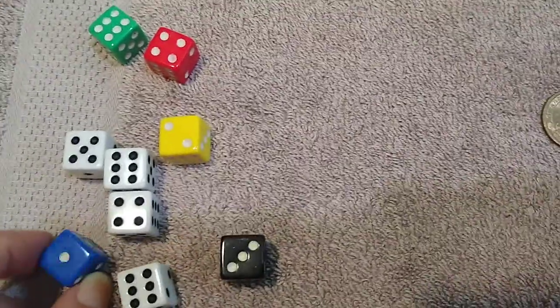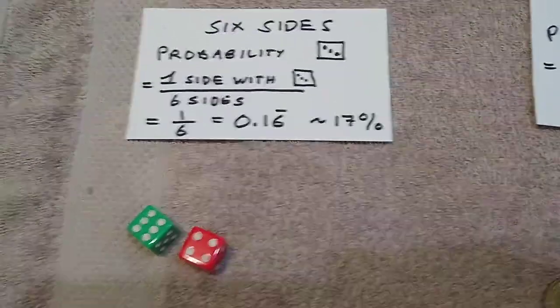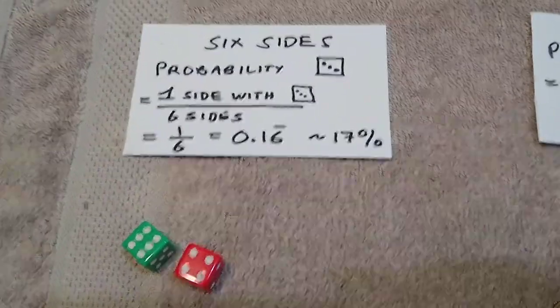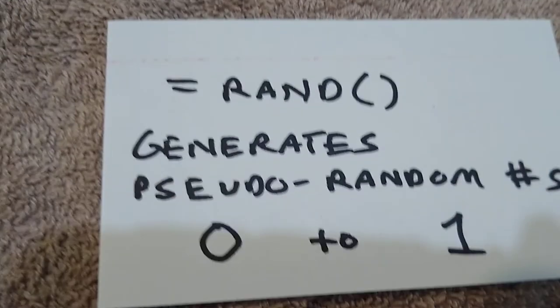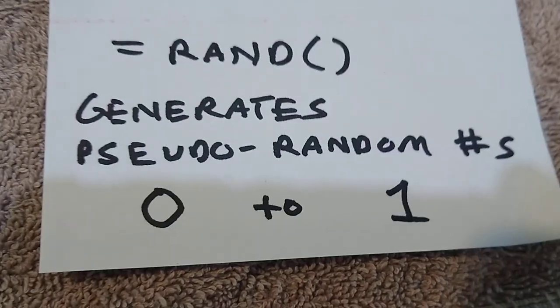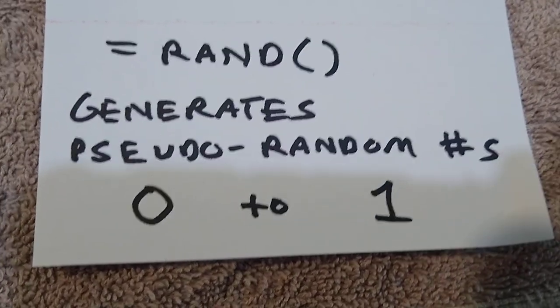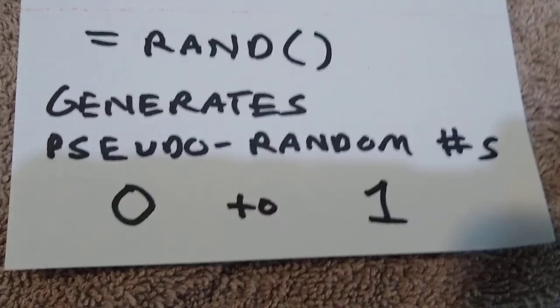These are just simple probabilities of single objects. In another video linked below, I can show you how to use the random number function to generate dice on a Google spreadsheet. The random number function generates pseudo-random numbers from zero to one.